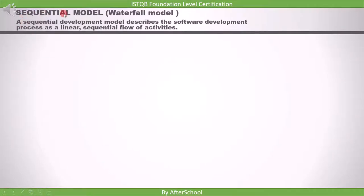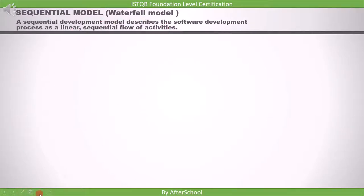Now we're going to discuss the first software lifecycle model: the sequential development model. An example of a sequential model is the waterfall model. The definition of this model is that it describes the software development process as a linear sequential flow of activities.